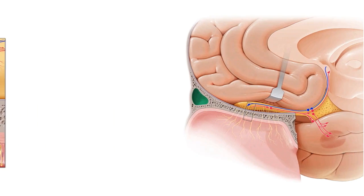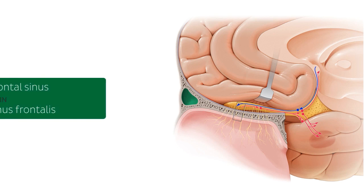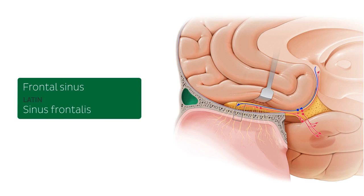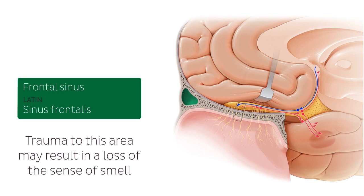Anterior to the cribriform plate, we can see this hollow region within the frontal bone — the frontal sinus. This is a paired structure lined by nasal mucosa, and is one of four paranasal sinuses. Trauma to this area may cause damage to the olfactory nerves, resulting in a loss of the sense of smell.